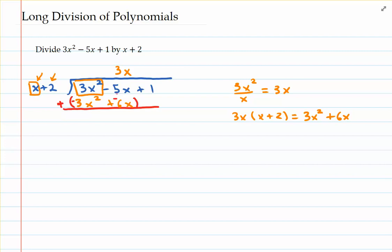So now we're just adding in column format. We're adding the opposites of those terms. So check this out. Let's now add 3x squared to negative 3x squared. What's that going to give you? A whole lot of nothing, right? In other words, they cancel each other out. Adding negative 5x to negative 6x gives us negative 11x. And the very last thing in this part is to drag down the positive 1.